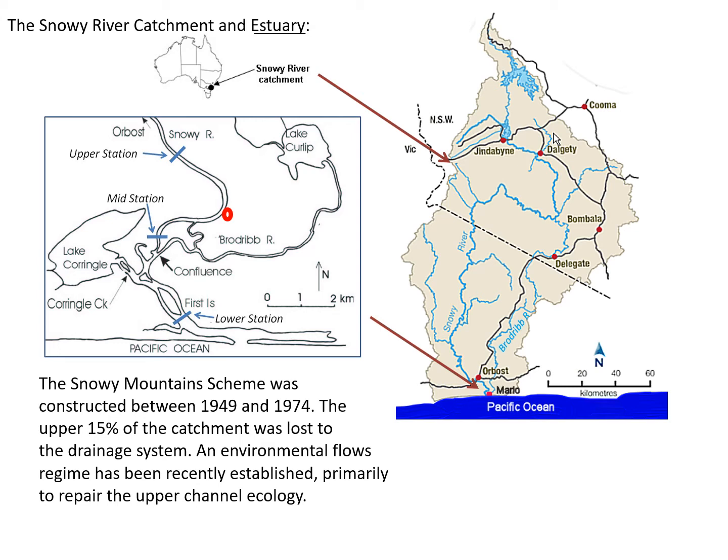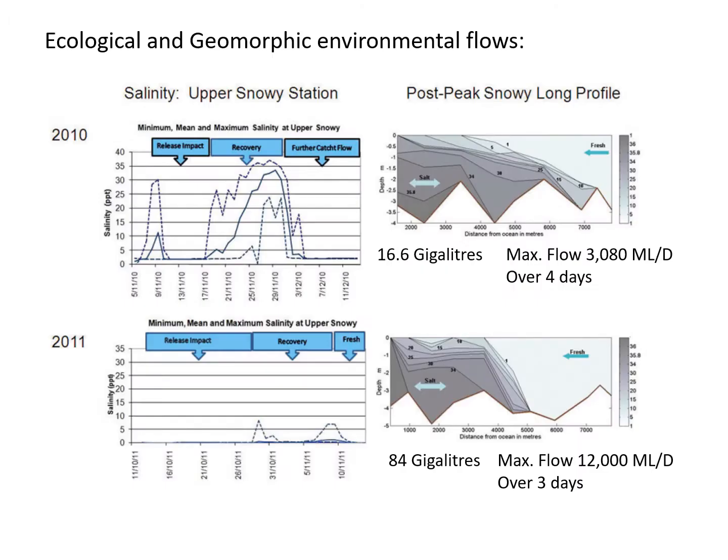Note on the map of the estuary on the left of the slide, the upper, middle and lower locations mentioned in our modelling are marked in blue lines, as well as the red circle, which was our upper monitoring station for the specific flow releases we monitored, depicted on the following slide. To explain the effects of EFRs of different magnitude, two pulse flows in 2010 and 2011 were monitored in the river segments of the catchment, and at this stage John Hinwood and I offered to monitor the estuarine component of the system.